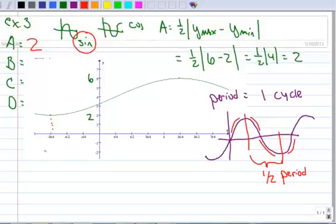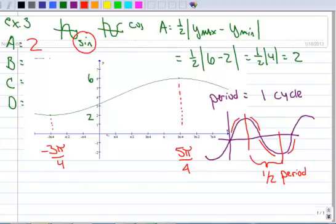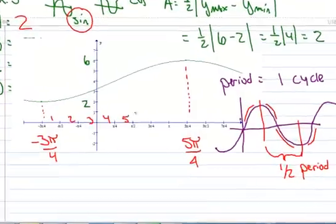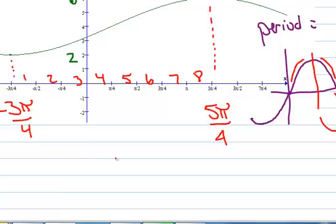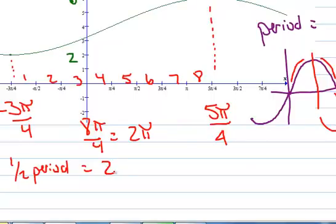Our minimum is at negative 3π/4 and our maximum is at 5π/4. The grid goes in increments of π/4. Counting from the minimum to the maximum, we have 8 increments of π/4, which gives 8π/4, and reducing that equals 2π. So half of the period equals 2π, and therefore the whole period is 2π × 2 = 4π.